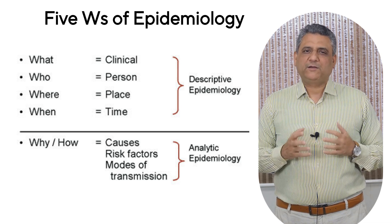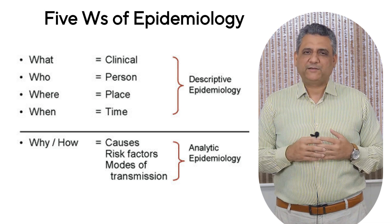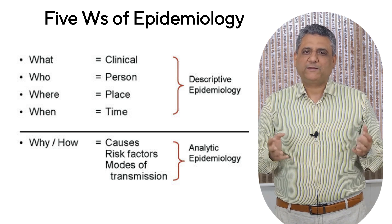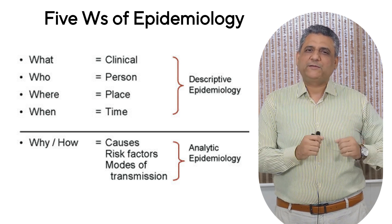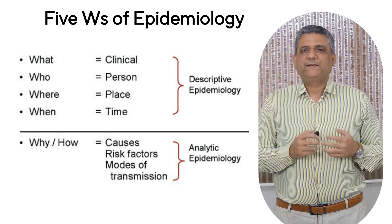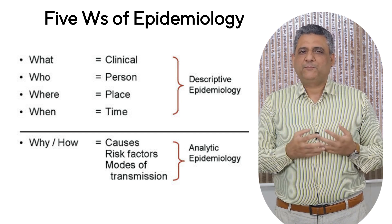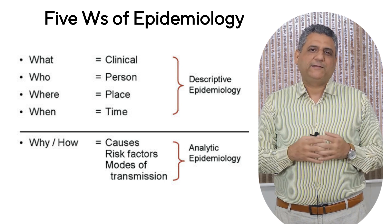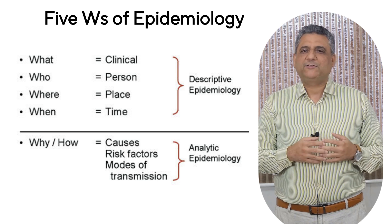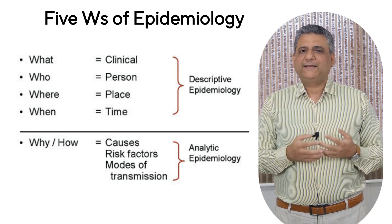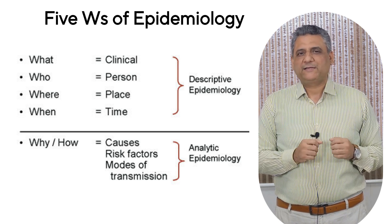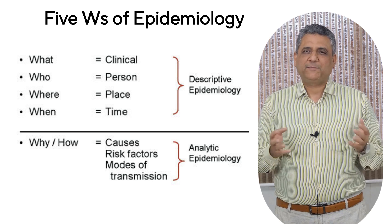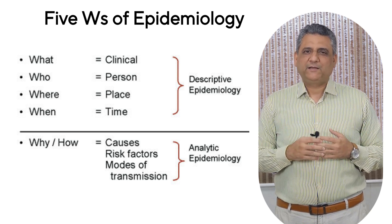These questions also explain how epidemiology is divided into two broad branches. When we answer who, what, when, and where, we're doing descriptive epidemiology — describing patterns of disease in populations. When we move to why and how, we enter analytical epidemiology — testing hypotheses and exploring causal relationships. In essence, descriptive tells the story; analytical finds the reason. If students remember that, they'll never forget the heart of epidemiology.